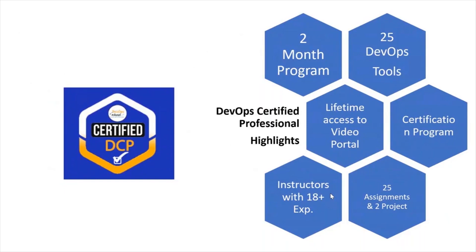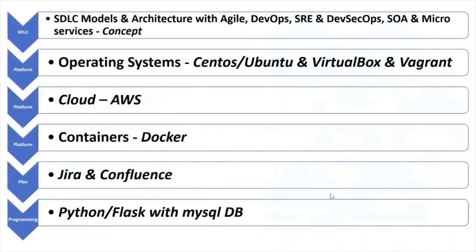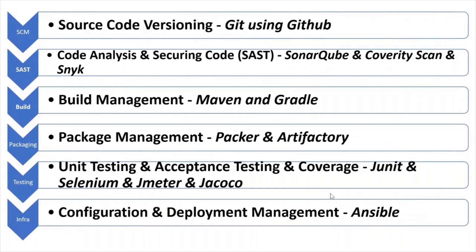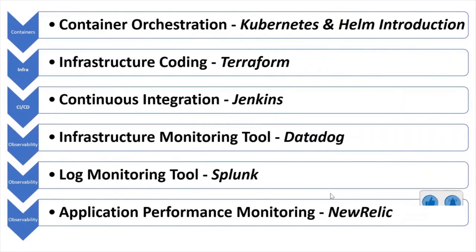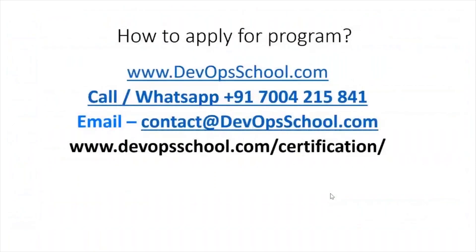You will have 25 assignments and two projects along with it. It's a completely weekend program with classes on Saturday and Sunday. As part of this course you will learn Linux, AWS, Docker, Jira, Confluence, Python, Git with GitHub, SonarQube, Maven, Gradle, Packer, Artifactory, Selenium, JMeter, Ansible, Kubernetes, Helm, Terraform, Jenkins, Datadog, Splunk, and New Relic.